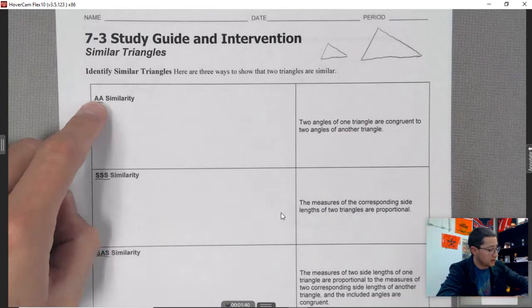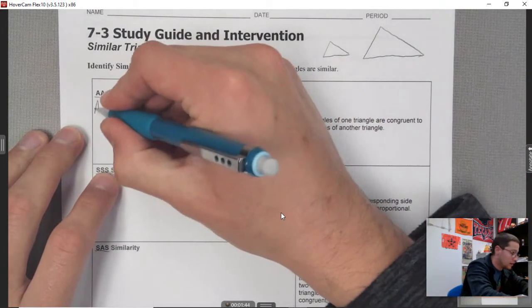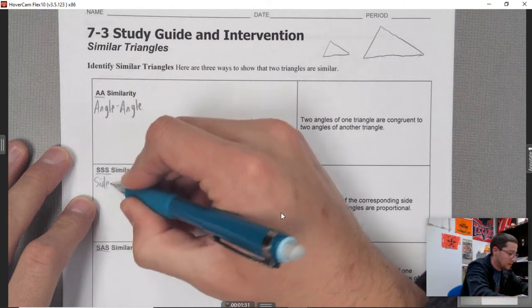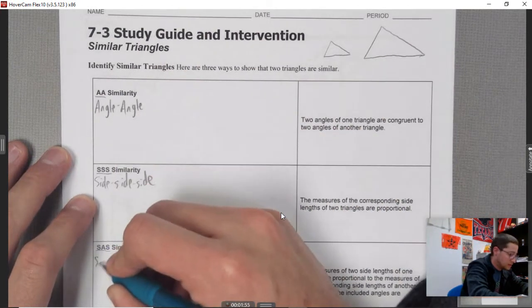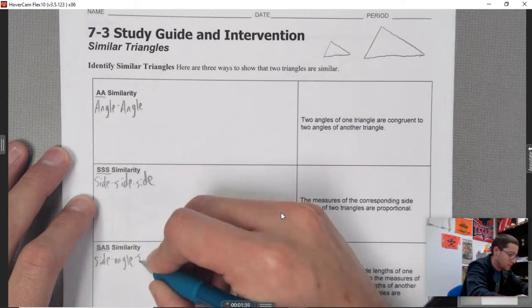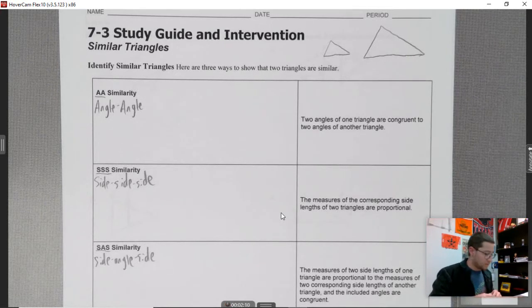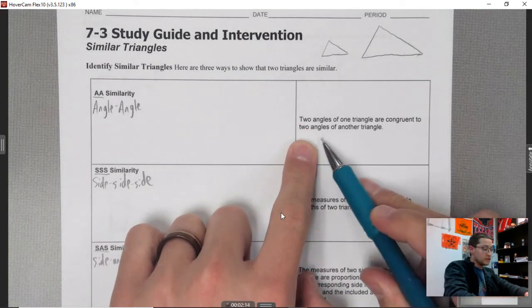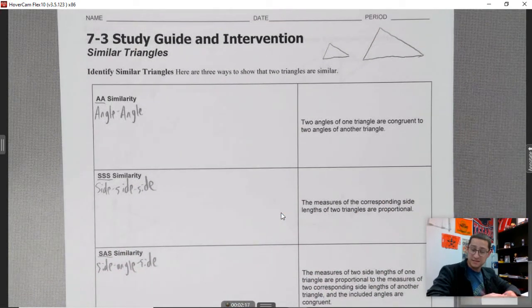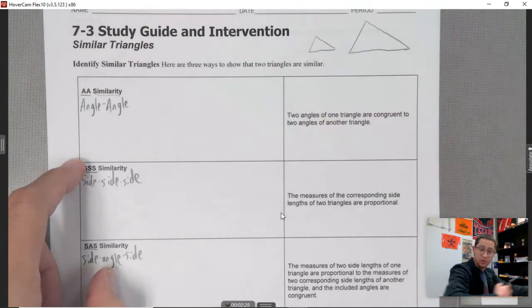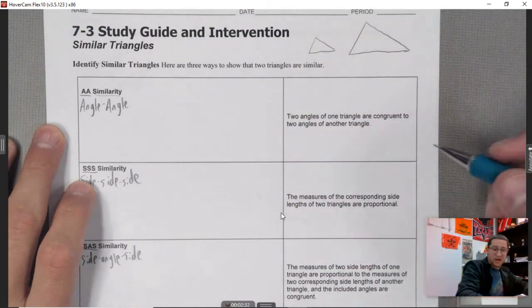These are angle-angle (AA), side-side-side (SSS), and side-angle-side (SAS). Let's start with angle-angle similarity. It says: two angles of one triangle are congruent to two angles of another triangle. If I have two angles on one triangle congruent to two angles on another, that means the triangles are similar.